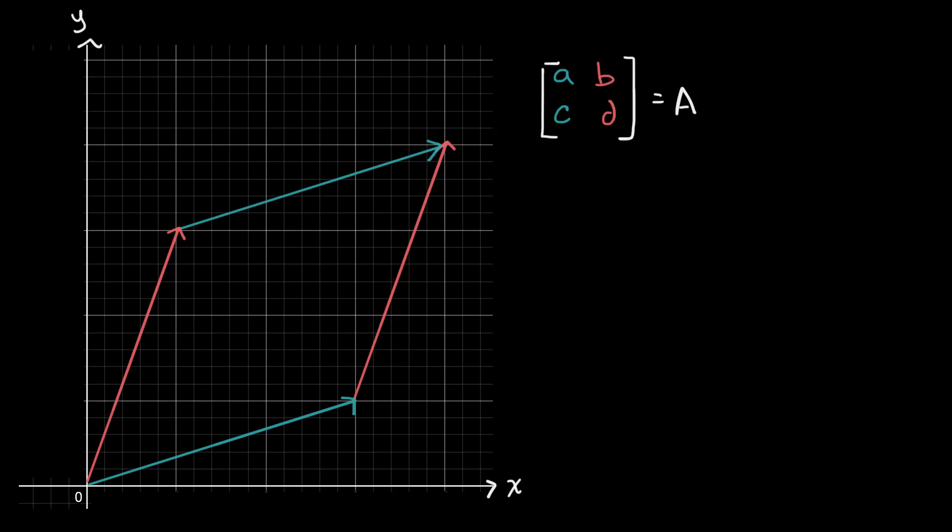The goal of this video is to feel good about the connection that we've talked about between the absolute value of the determinant of a two by two matrix and the area of the parallelogram that's defined by the two column vectors of that matrix.